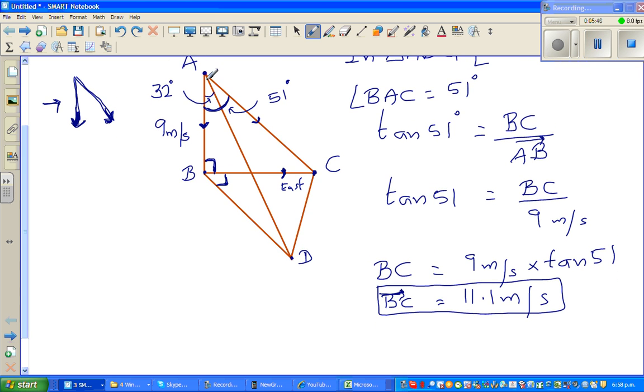Now the next part: angle ABD is also a right angle triangle. You have to see this in a 3D form. Imagine this is a tetrahedron. ABC is a surface and BCD is the ground. These are two surfaces which are perpendicular to each other. In triangle ABD, angle ABD is a right angle. Angle BAD is 32 degrees.